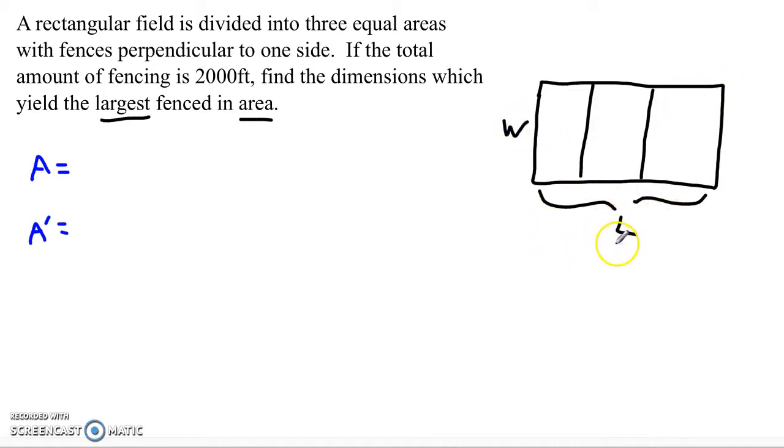So notice that means that I've got one length here, one length here, and one, two, three, four lengths of the W fence, right?